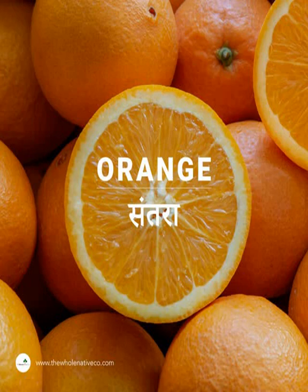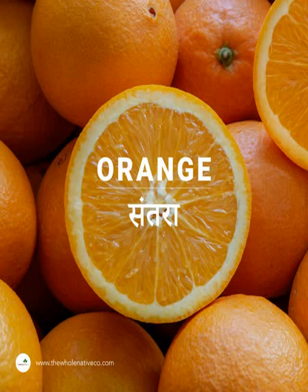The sweet orange is not a wild fruit, having arisen in domestication from a cross between a non-pure mandarin orange and a hybrid pomelo that had a substantial mandarin component. Since its chloroplast DNA is that of pomelo, it was likely the hybrid pomelo — perhaps a BC1 pomelo backcross — that was the maternal parent of the first orange. Based on genomic analysis, the relative proportions of the ancestral species in the sweet orange are approximately 42% pomelo and 58% mandarin.